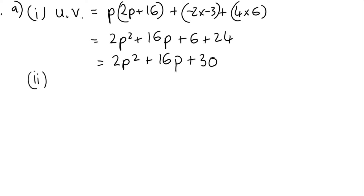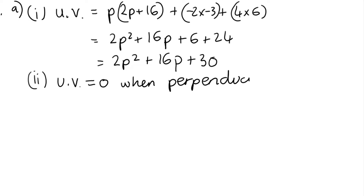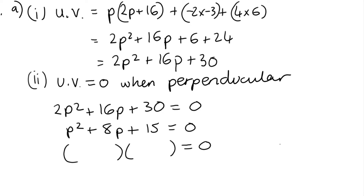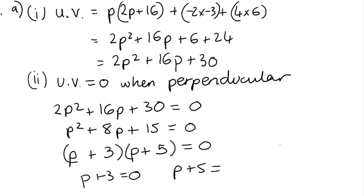Part 9a part 2: determine the values of p for which u and v are perpendicular. When vectors are perpendicular, u dot v equals 0. So put 2p squared plus 16p plus 30 equal to 0. Dividing everything by 2 gives p squared plus 8p plus 15 equals 0. Factorising: p plus 3 equals 0 or p plus 5 equals 0. So p equals negative 3 or p equals negative 5.